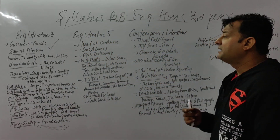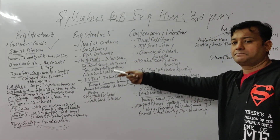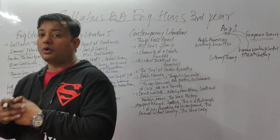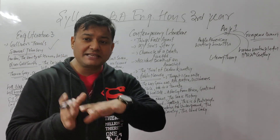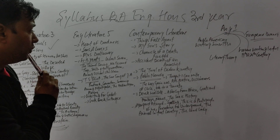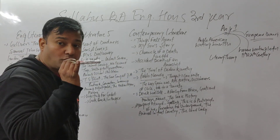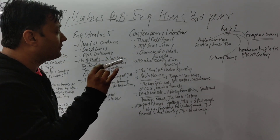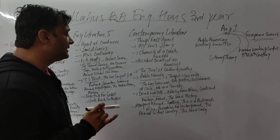Then we are having Mrs. Dalloway — this is the stream of consciousness technique. The stream of consciousness has been mentioned at this point; the character changes go higher and the narrative tells the character what he has to tell. Then we are having Chronicle of a Death Foretold — it says 4-5 years ago, the narrative tells the character what he has to tell.